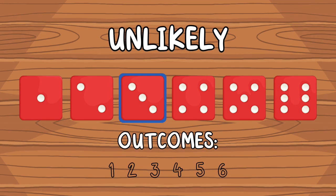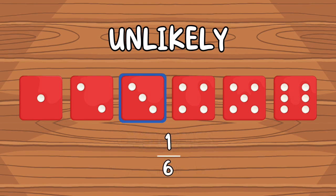When we roll a dice, there are six outcomes: one, two, three, four, five, or six. And only one of these outcomes is a three, so we say that the probability of throwing a three is one over six.